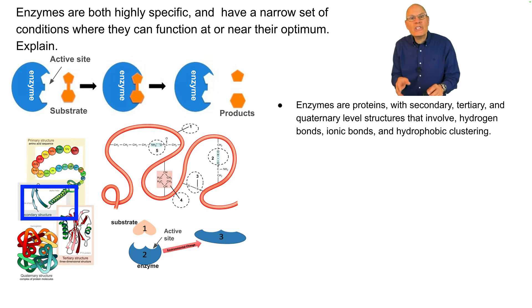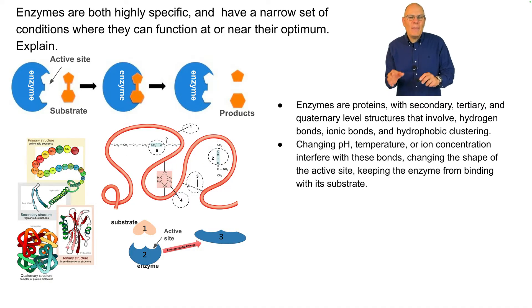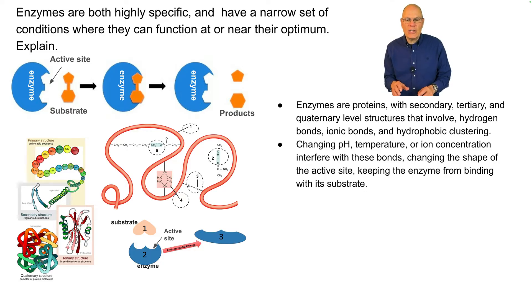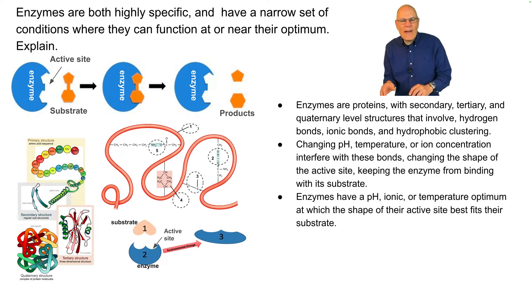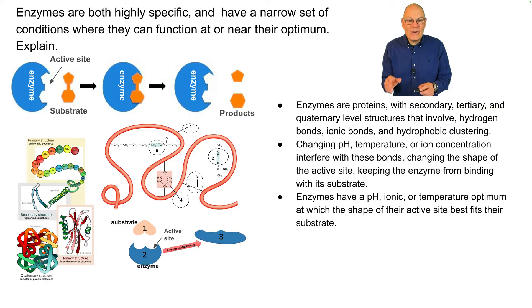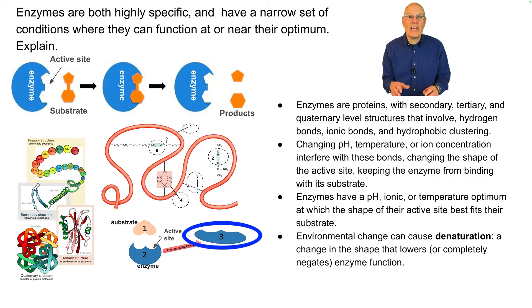Enzymes are proteins with secondary, tertiary, and quaternary level structures that involve hydrogen bonds, ionic bonds, and hydrophobic clustering. Changing pH, temperature, or ion concentration interferes with these bonds, changing the shape of the active site and keeping the enzyme from binding with its substrate. Enzymes therefore have a pH, ionic, or temperature optimum at which the shape of their active site best fits their substrate. Environmental change can cause denaturation — a change in the shape of the enzyme that lowers or completely negates enzyme function.